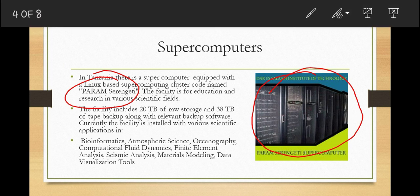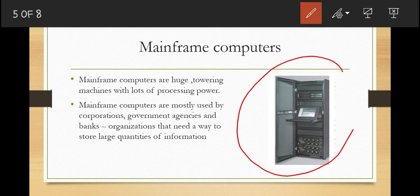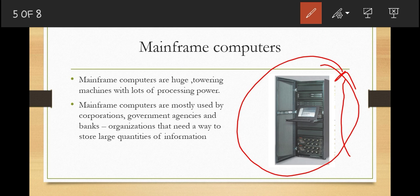Another type of computer is what we call mainframe computers. Just like supercomputers, mainframe computers are also huge — they are towering machines with a lot of processing power. Mainframe computers are mostly used by corporations, government agencies, and banks — organizations that need to store large quantities of information. Their processing capabilities are measured in millions of instructions per second.